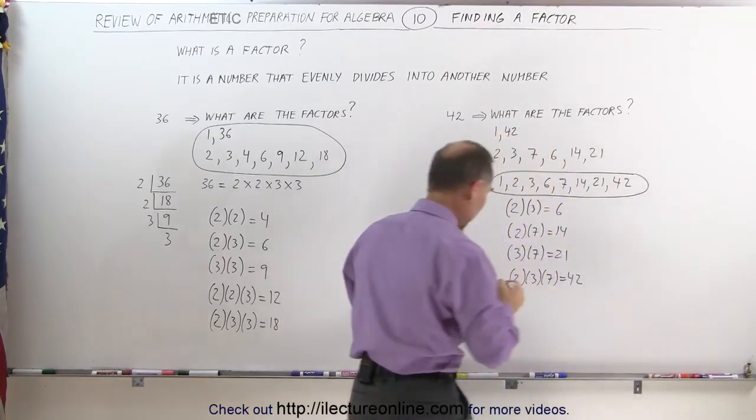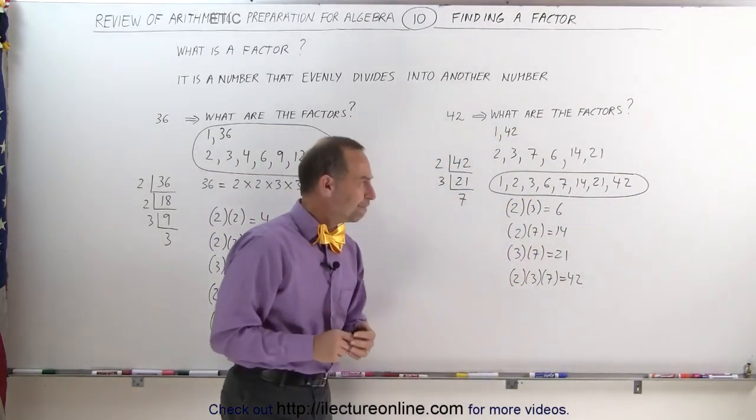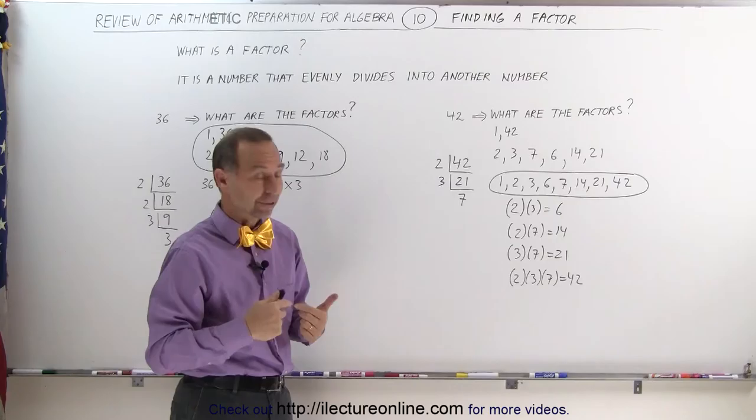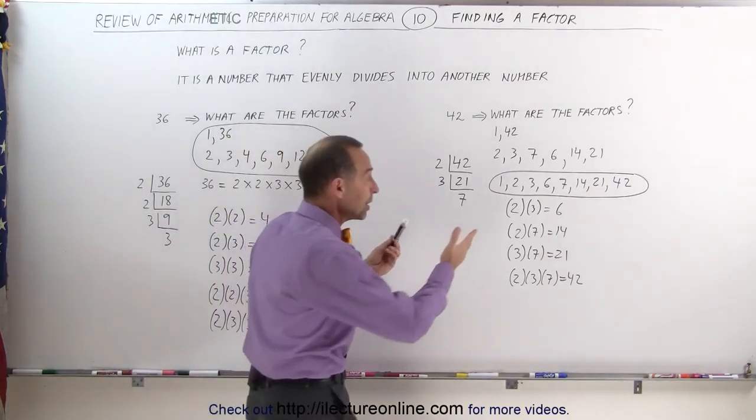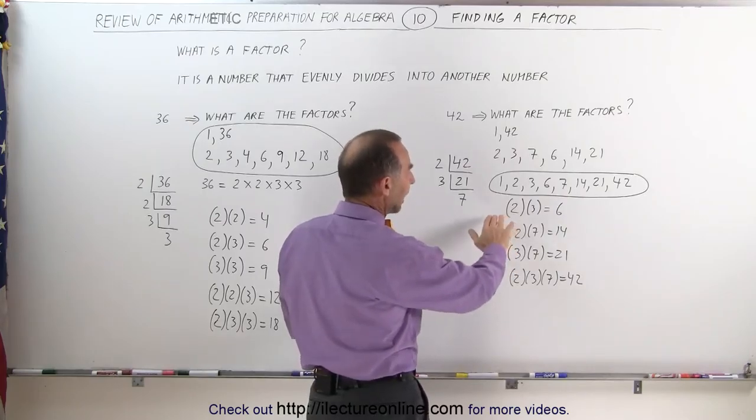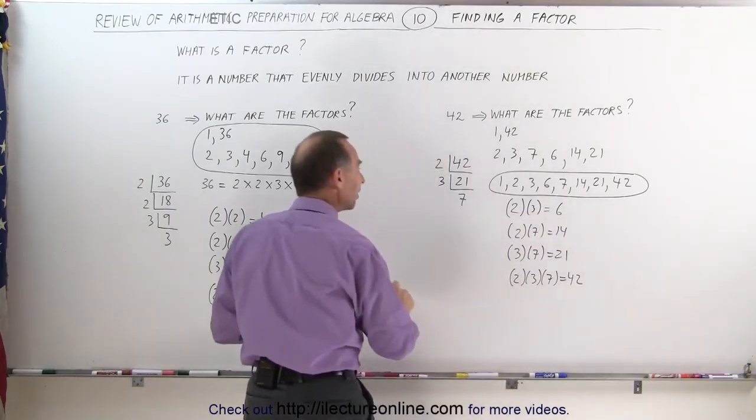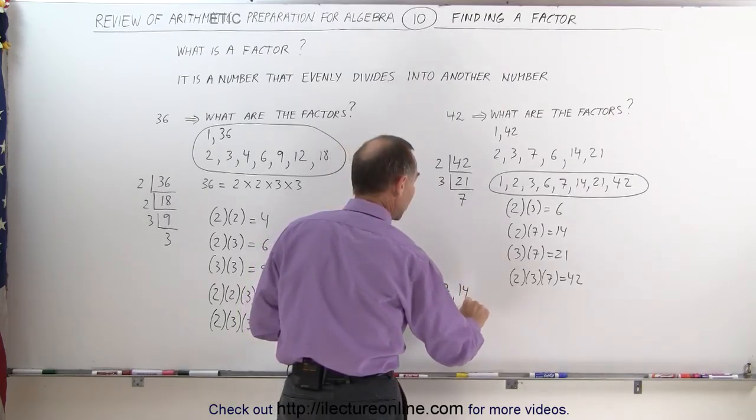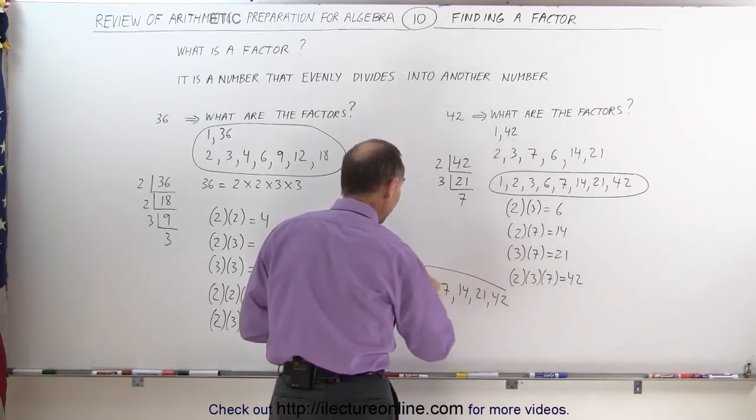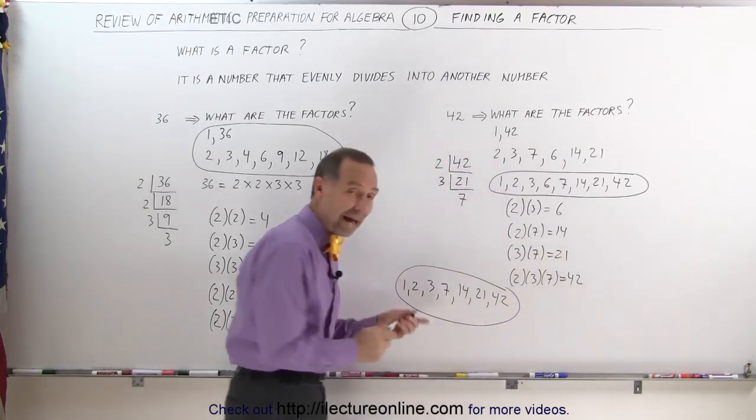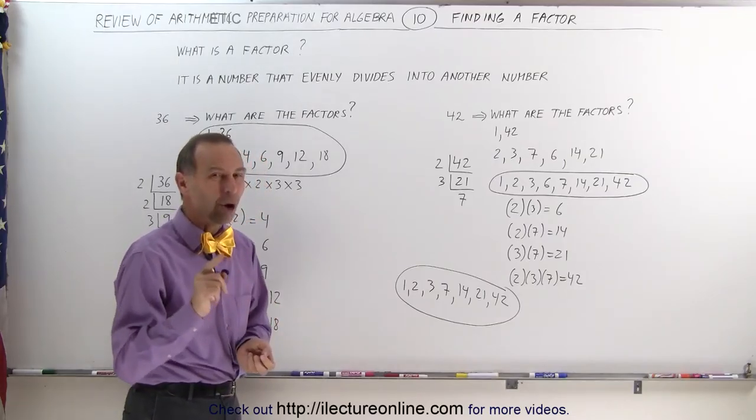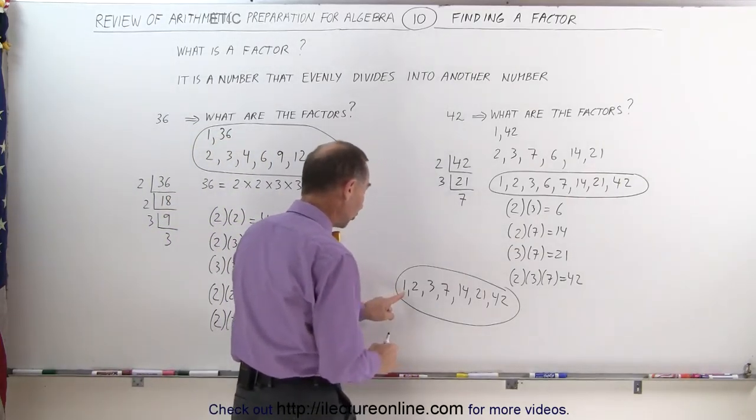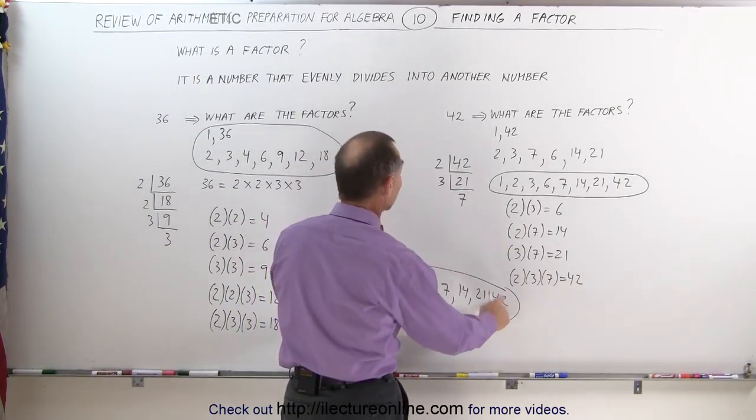So, you may wonder, what if I forgot one of the factors? How does the check tell me that I forgot one of the factors? Well, let's try that. Let's say that we forgot the 6. Somehow, we did not do this multiplication, and we forgot the number 6. Let's see what we end up with. 1, 2, 3, 7, 14, 21, and 42. Even though all of these are indeed factors of the number 42, we didn't find all of them. We missed the number 6. Let's do our check and see what would happen. Again, you take the first and the last number, multiply them together, 1 times 42 gives me 42. 2 times 21, that gives me 42 as well. 3 times 14, that gives me 42 as well.